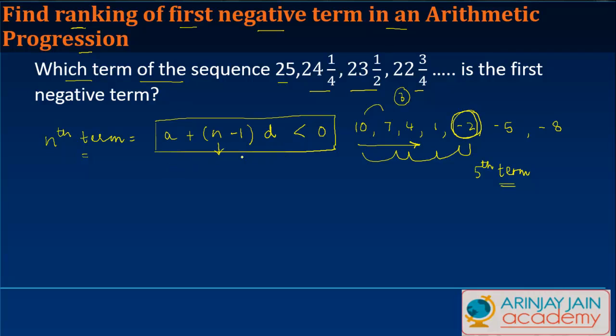So what is the first term of the AP? The first term of the AP is 25 plus n - n is what we need to find out, so I'll put it as n minus 1 into d. What is the value of d? d can be found out by subtracting the first term from the second one.